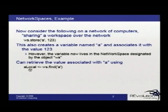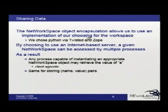If we want to retrieve it, we just say WS.find — where WS is that workspace — find A, and it returns the values 1, 2, and 3. This allows us to encapsulate our implementation. We chose to do this via Twisted and Zope in Python. It's client agnostic, so we're not limited to just R. We can write parallel applications in Python using Network Spaces, or in MATLAB. We have clients for both of those, or any other language that can communicate over the network.